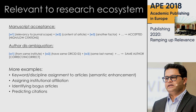Author disambiguation is another challenging problem where you can apply the same techniques. For example, I have John Smith and John Smith. If two John Smiths have the same ORCID ID, they may be the same person. If one John Smith is working on history and another on physics, probably they are not the same person. I can look at the data and classify whether the authors are the same. And there are more examples: keyword and discipline assignment to articles, assigning institutional affiliation, identifying bogus articles, identifying outliers, and predicting citations — these are topics that will be discussed in the following talks.